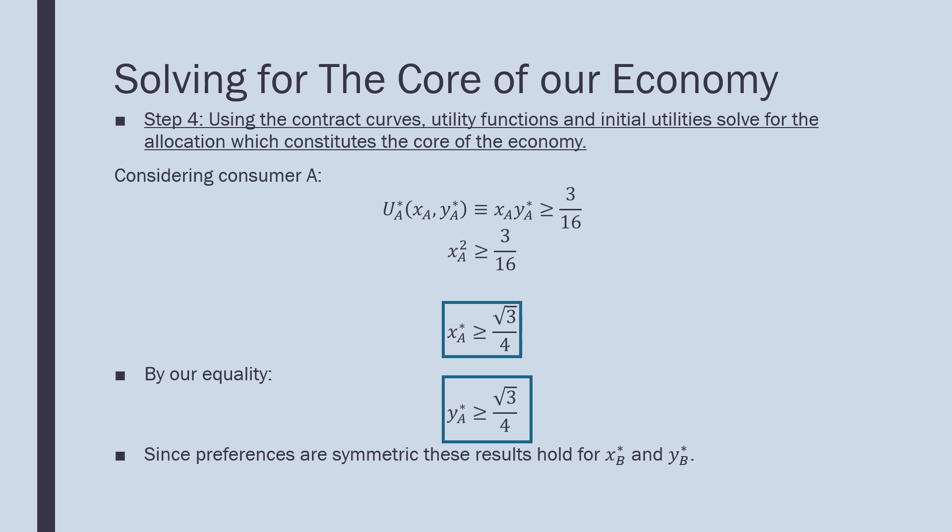We find that xa star—this optimal point—must be greater than or equal to the square root of three all over four. By our equality, meaning that they are consumed exactly together in a complementary factor, we're going to have the same functional value. Since our preferences are symmetric, these are also going to be the values for xb and yb respectively.